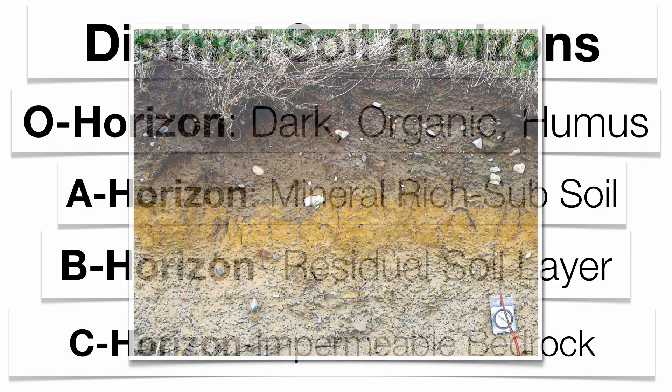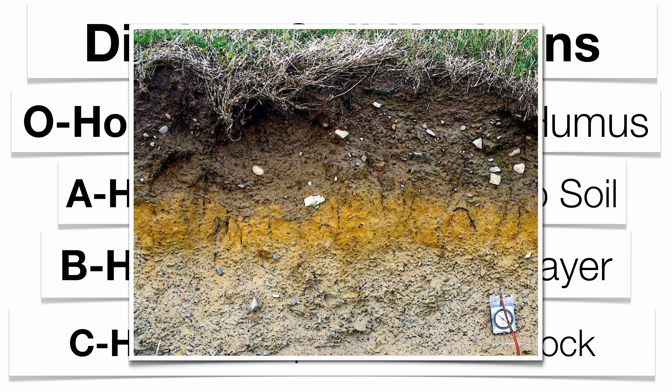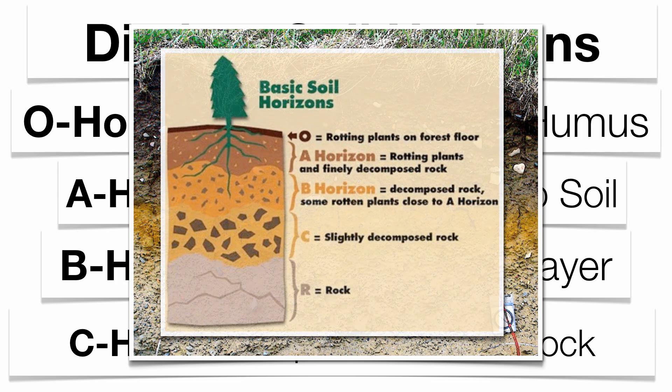Here is an actual photograph showing some of the different layers, where you can identify three distinct horizons. There's also an artist's rendition showing horizons O, A, B, C, and also R. Depending on the diagram's detail, you'll know how many horizons to identify, but for Regents purposes the O horizon is by far the single most important. Thanks so much for joining me, and we'll see you soon.